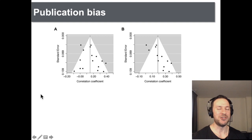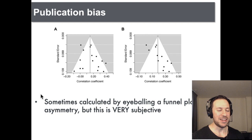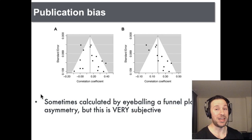Typically when it comes to publication bias, people will construct these so-called funnel plots. Sometimes people will actually eyeball these funnel plots and say this funnel plot is not symmetrical, or this funnel plot is symmetrical, therefore there is no evidence of publication bias. Of course, this is really subjective if you're simply eyeballing a funnel plot and looking for symmetry.